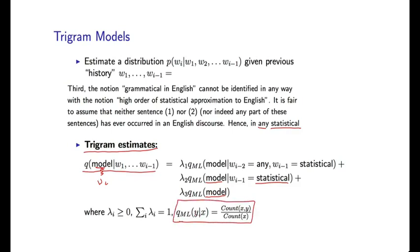If I want to estimate the probability of some y given some context x, I take the ratio of these two counts. These lambdas, these three values lambda 1, lambda 2, lambda 3, dictate the relative weight of these three estimates. These lambdas are positive and they sum to 1.